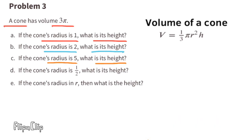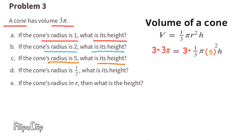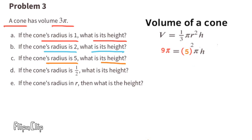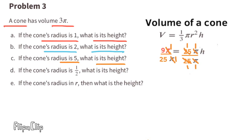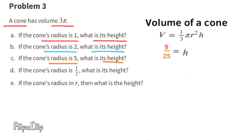Part c: If the cone's radius is 5, what is its height? Substitute r with 5. Multiply both sides by 3: 3 times 3 pi equals 9 pi, and 3 times 1/3 pi equals pi. The equation reads 9 pi equals 5 squared times pi times h. 5 squared equals 25, so 9 pi equals 25 pi times h. Dividing both sides by 25 pi gives h equals 9/25. When the radius is 5, the height of this cone is 9/25 units.